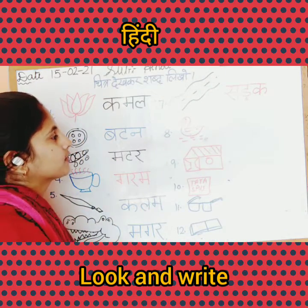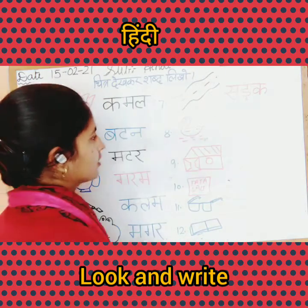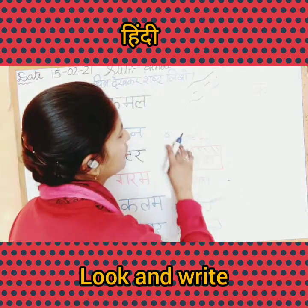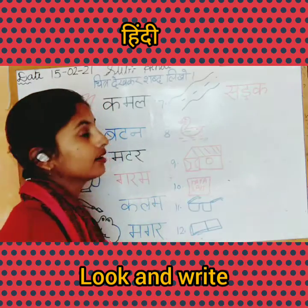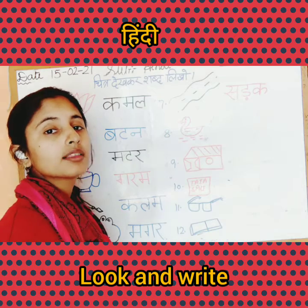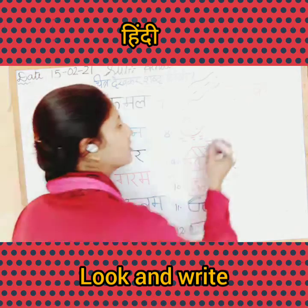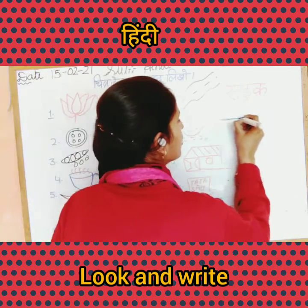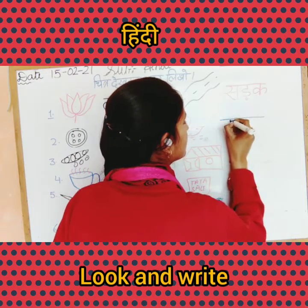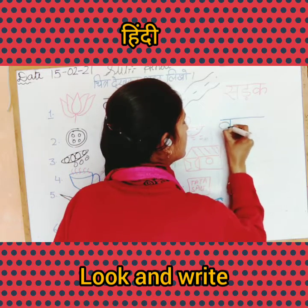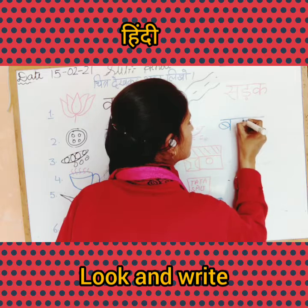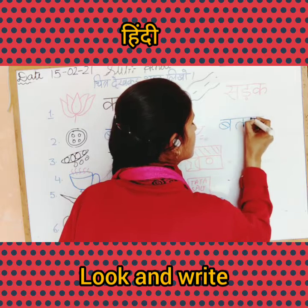Now see the next picture — dekhi, eight number per kis-ki picture hai? Ba-ta-k. Now you have to write on the eighth number: Ba-ta-k.